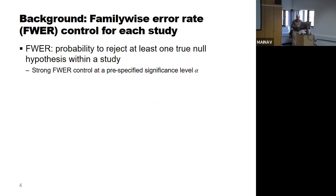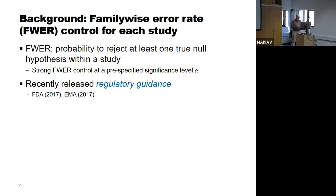This has to be controlled at a pre-specified significance level alpha, typically two and a half percent one-sided or five percent two-sided. This family-wise error rate control is very well known and documented in various regulatory guidelines.